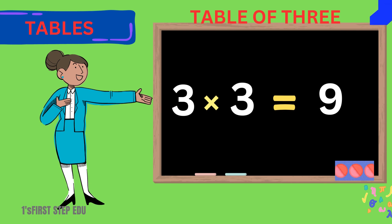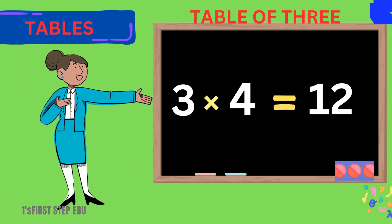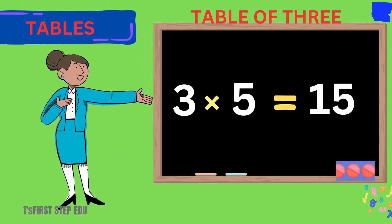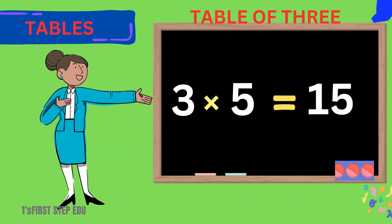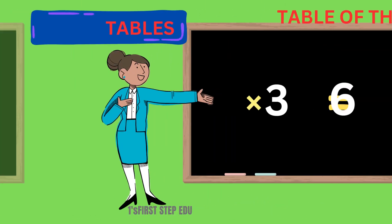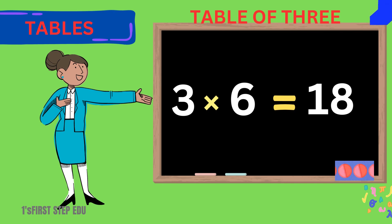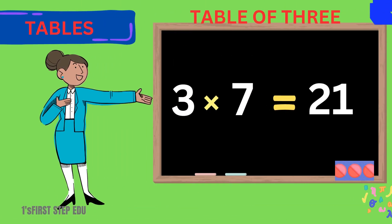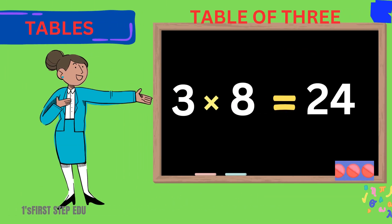3 ones are 3. 3 ones are 3. 3 twos are 6. 3 twos are 6. 3 threes are 9. 3 threes are 9. 3 fours are 12. 3 fours are 12.